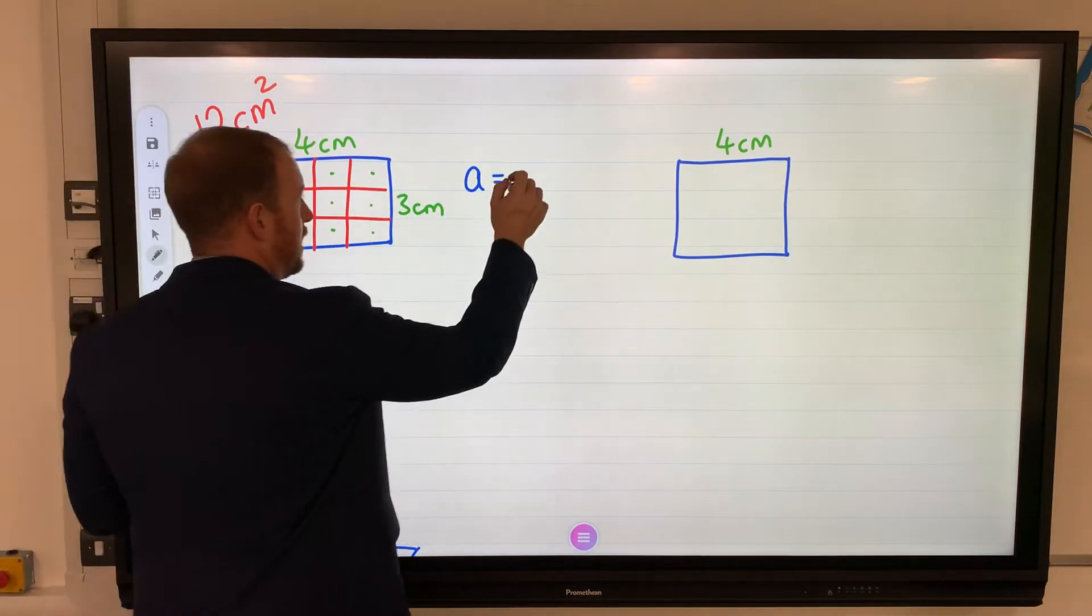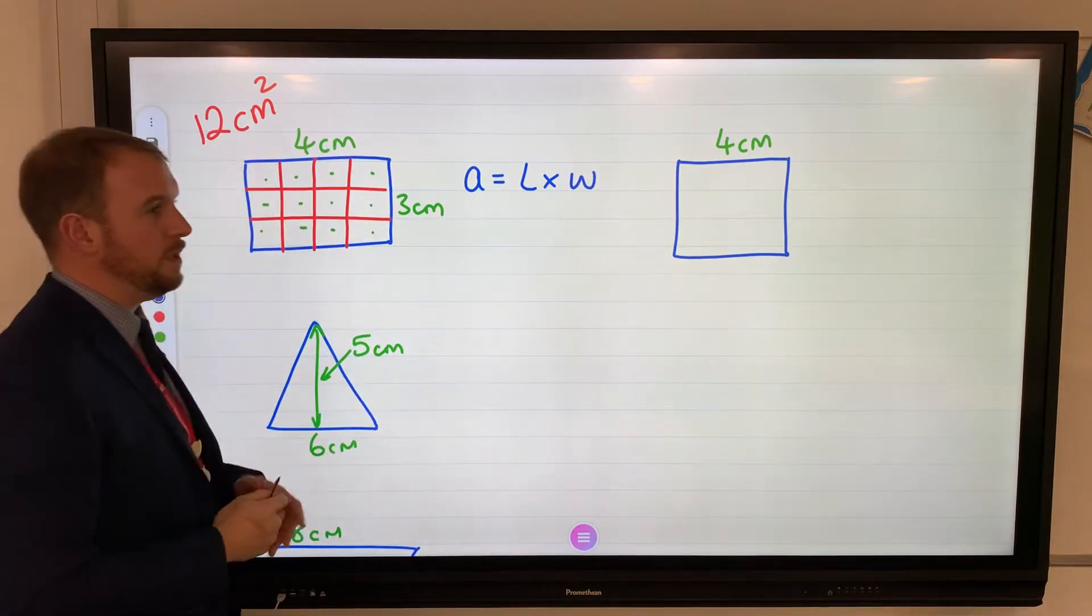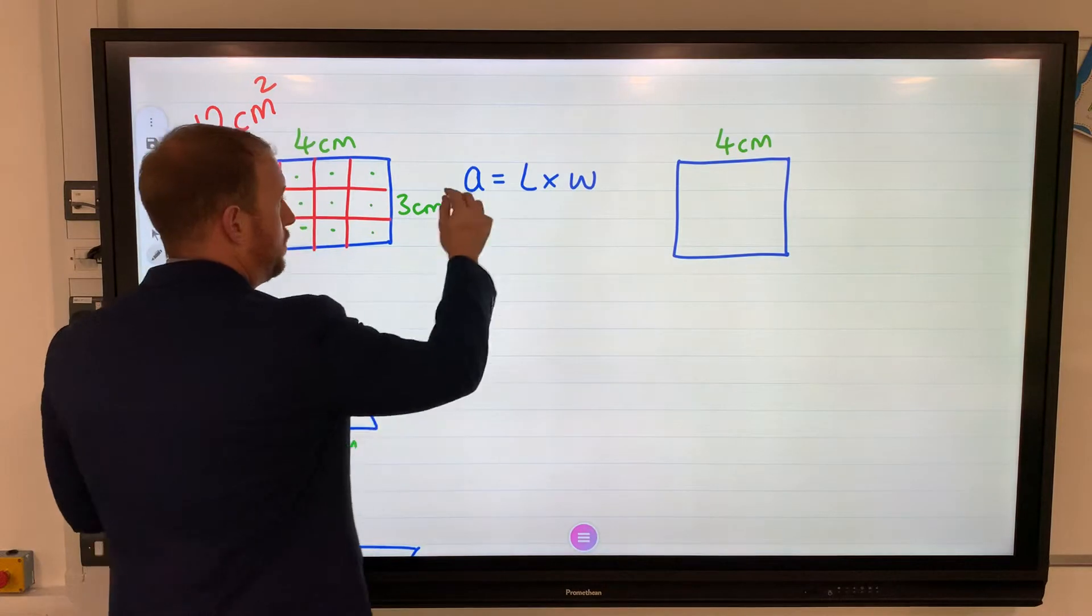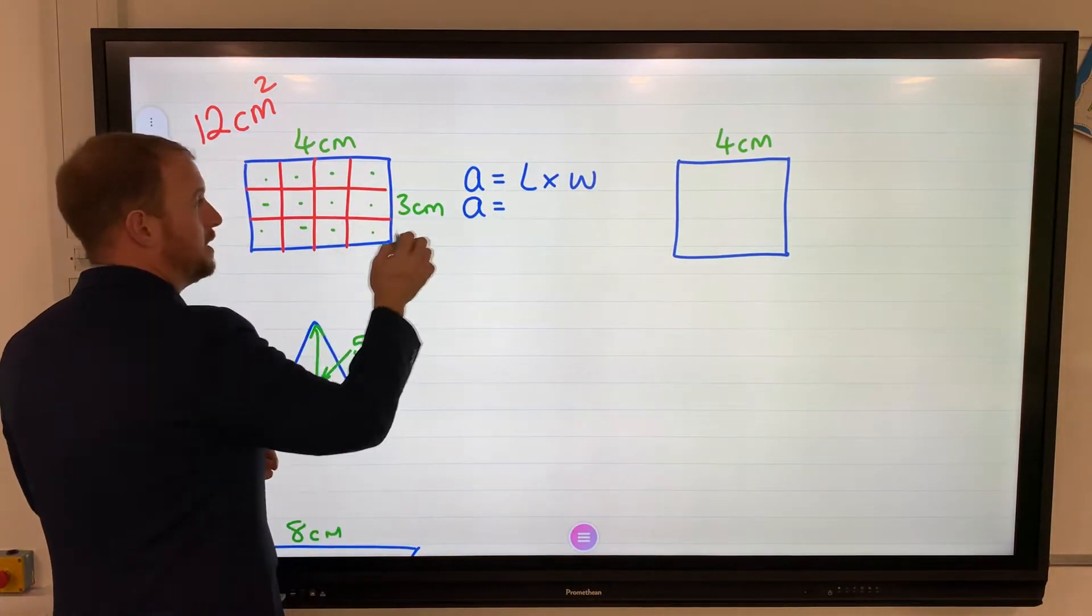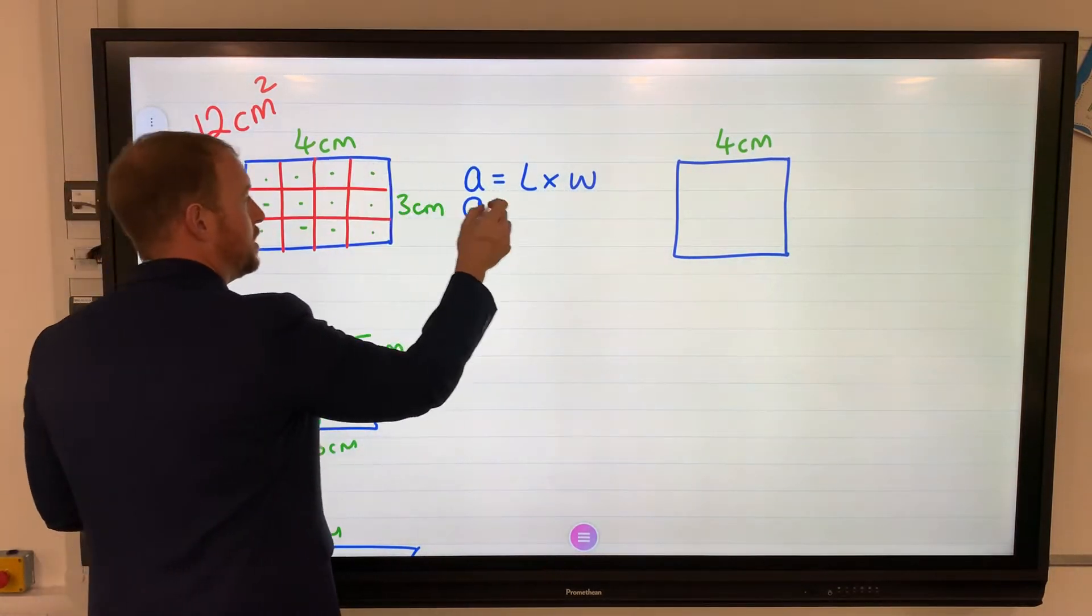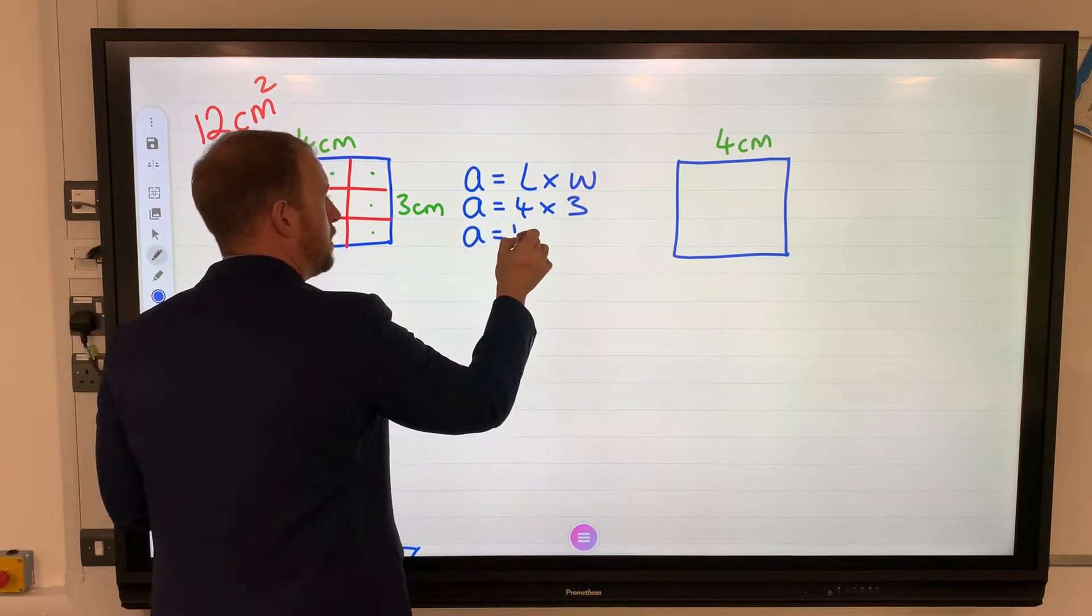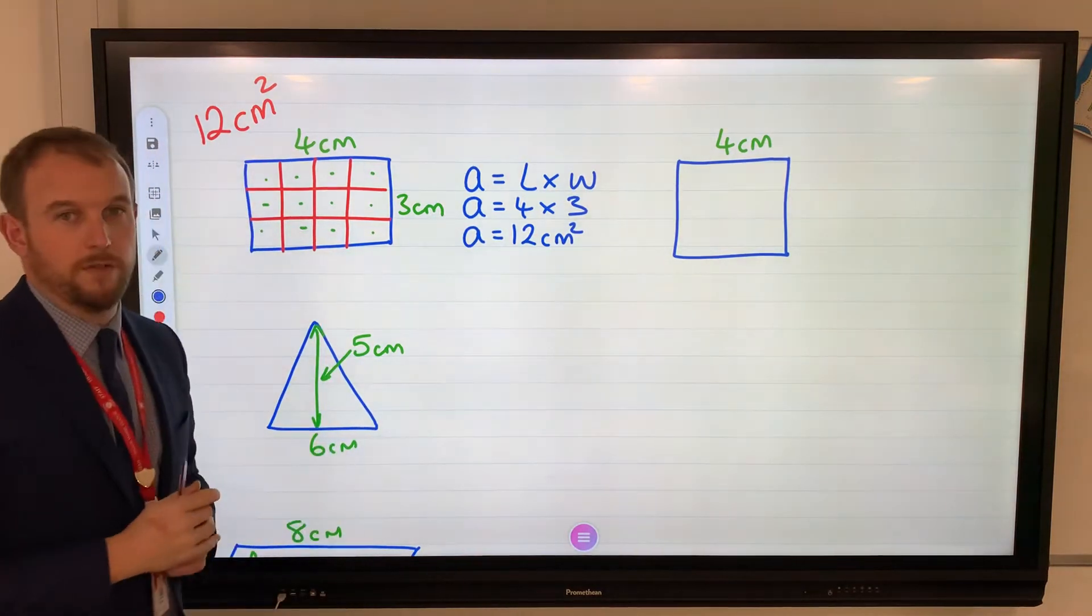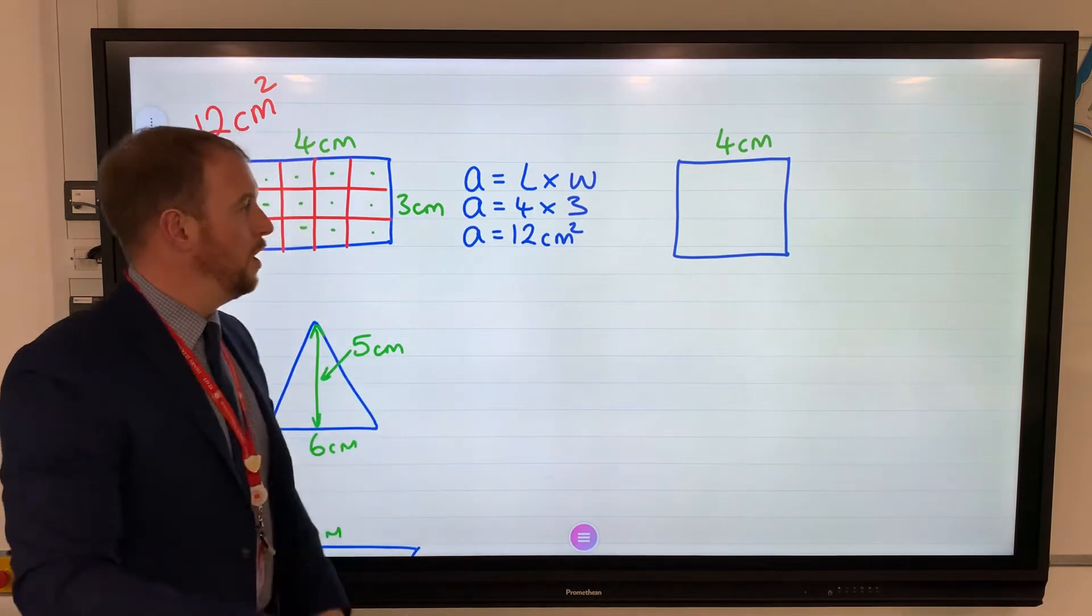So four is the length, three is the width, and that will work for every single rectangle as long as we use the right formula and then substitution, which means I'm going to remove the letters and put a number in. So the length is four, width is three, four times three is twelve. We know this formula is correct. Don't forget the units of measurement on the end.